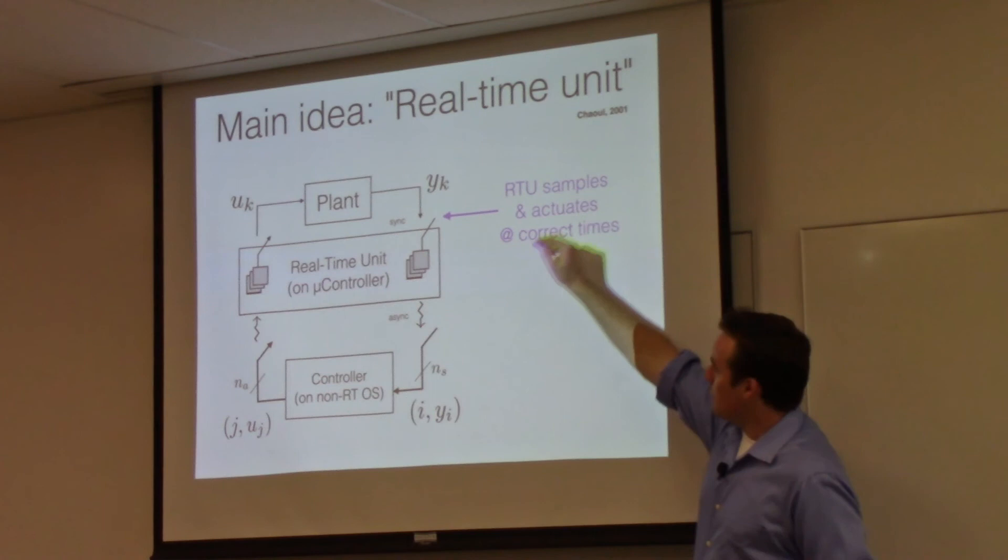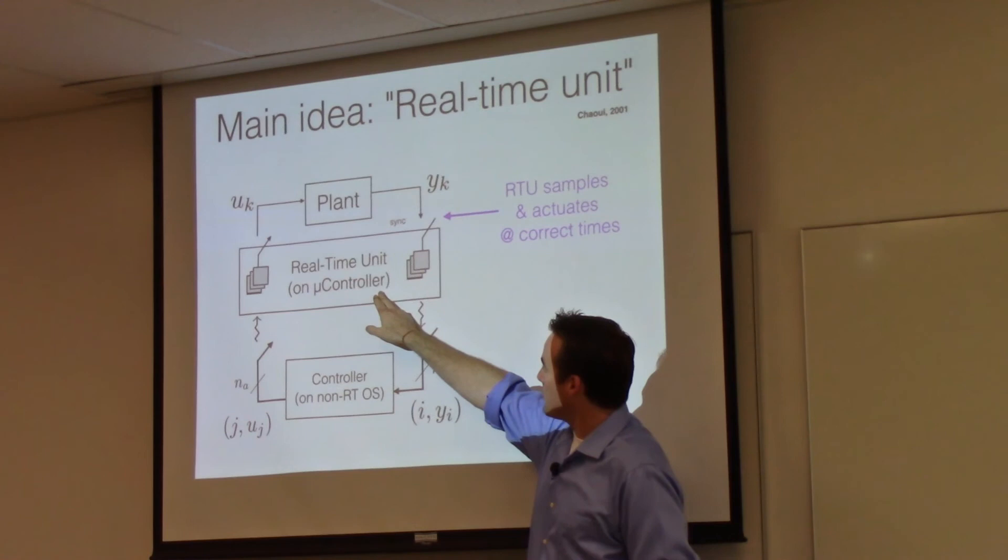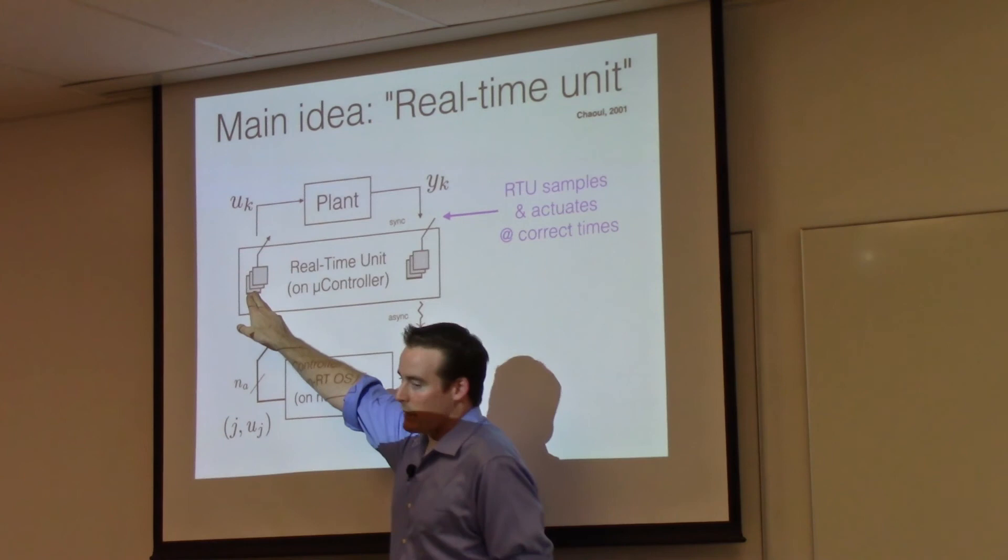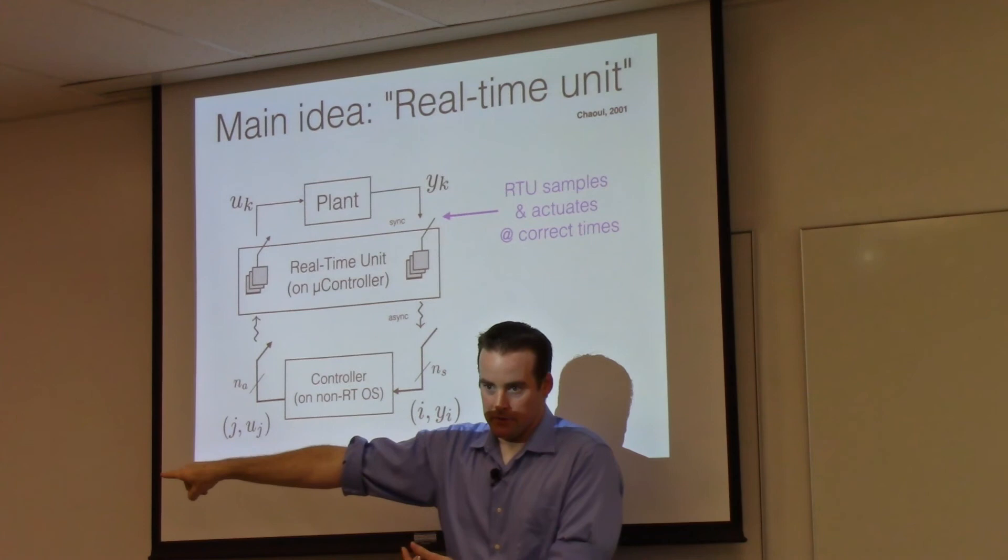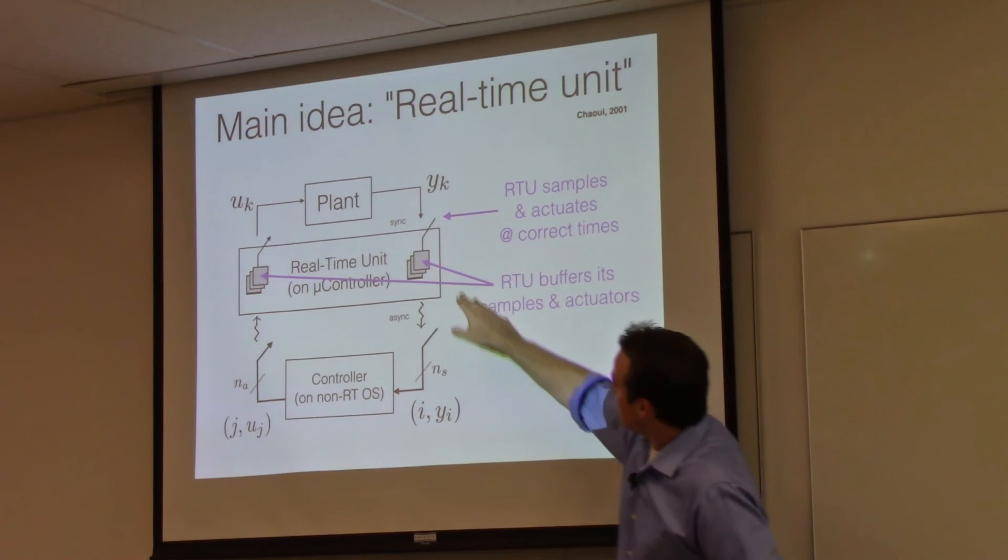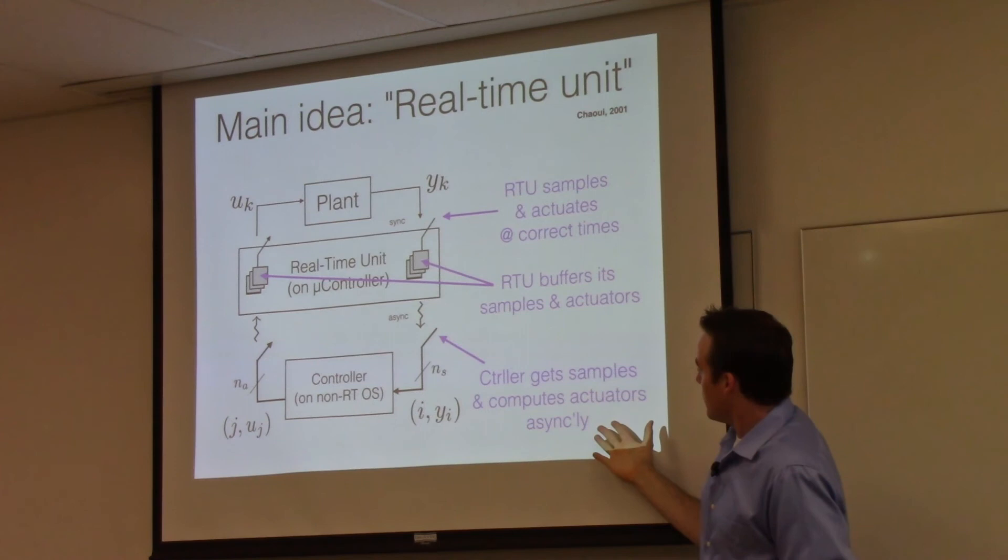The main idea is that the RTU, the real-time unit, will sample the plant periodically at very precise times. This RTU is not doing anything besides just collecting samples from the plant and actuating. It's given an actuation schedule of time-stamped actuator values and at that time-stamp, the RTU will select that sample and write it out to the IO. So that's what the RTU is supposed to do. It buffers up the sensor values and executes out of a buffer the actuator values.